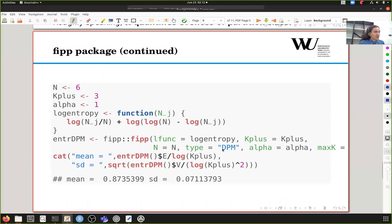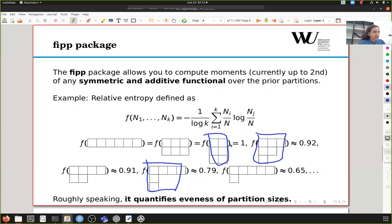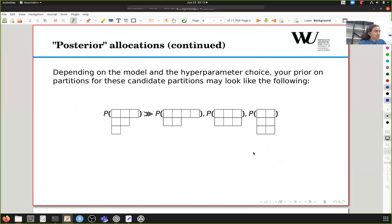Then we also supply the type, which is the model. Here we supply Dirichlet process mixtures. Alpha is the concentration parameter of this model, which we set to one. The mean we get is 0.87. This is a bit higher than the arithmetic mean of this and this and this, which means that the DPM with alpha equals one assigns slightly higher prior weight on this partition as opposed to these. But not too much, so we are not likely in this situation at least.